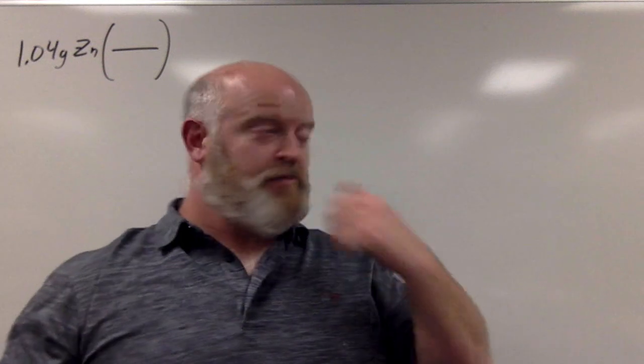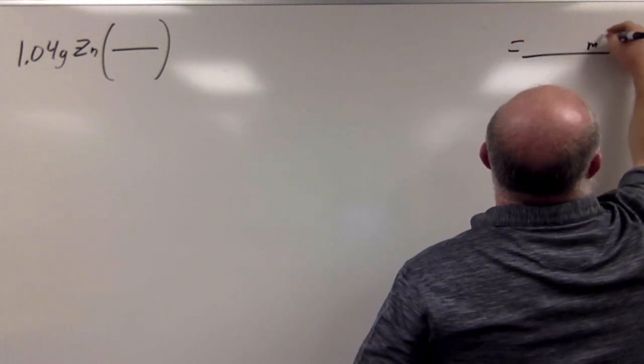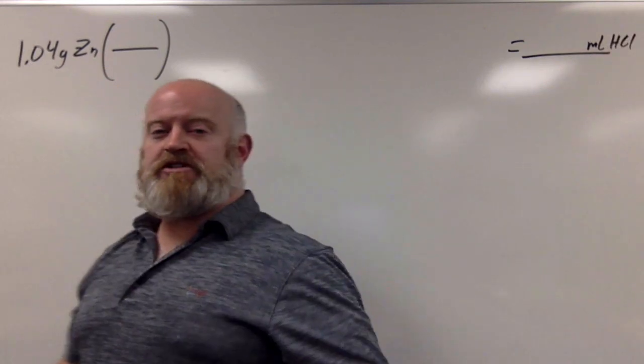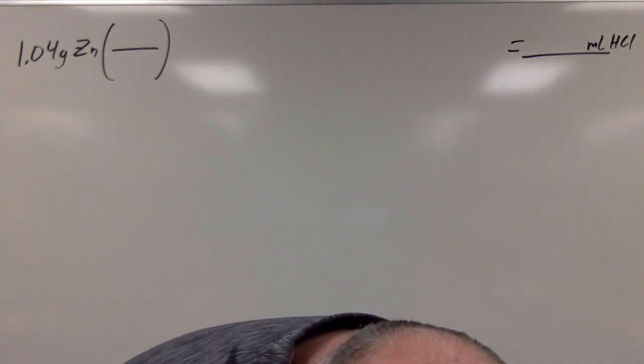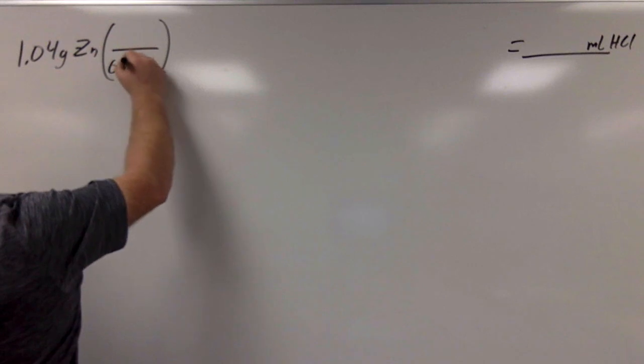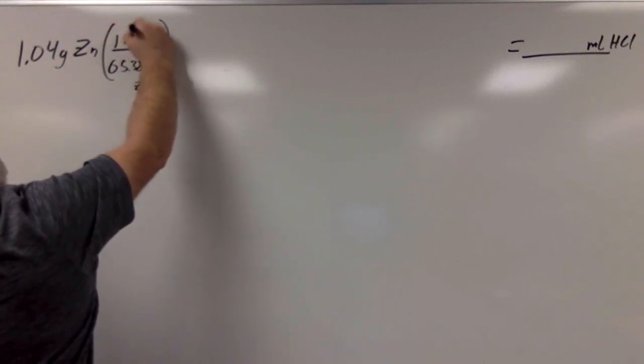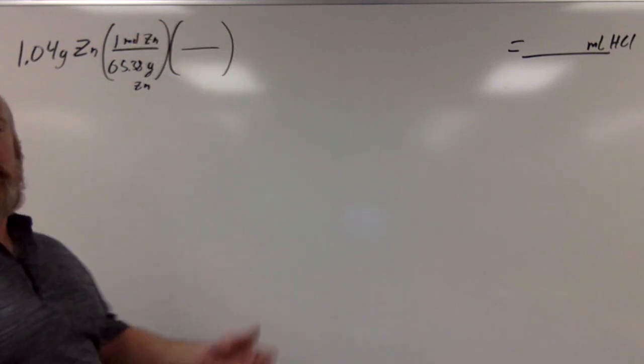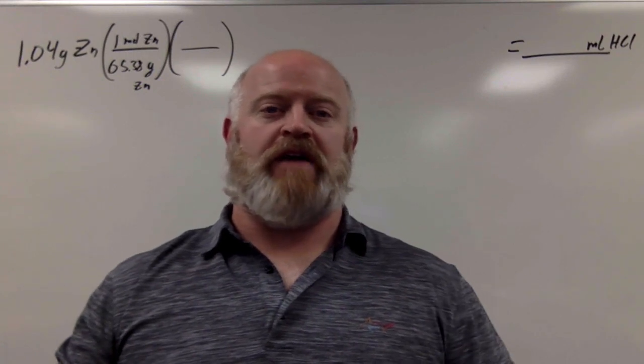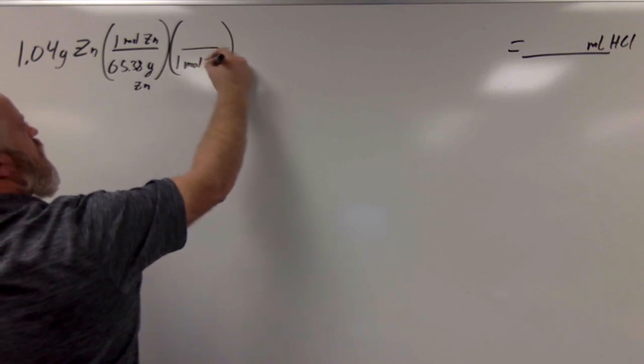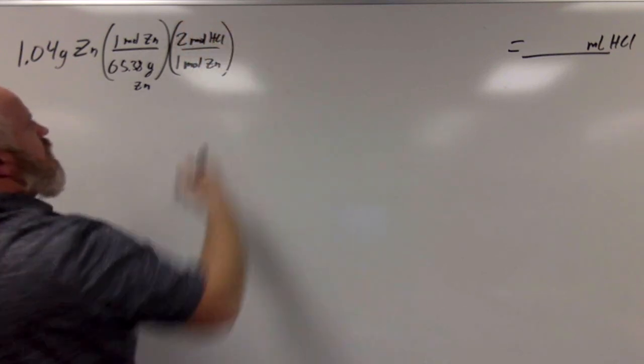So we have 1.04 grams of zinc. And we want to solve for how many milliliters of acid we're going to use. So at the end of this thing, we're going to have milliliters of HCl. So our first step, we have grams of zinc. Let's get to moles. We always want to go to moles as soon as possible. So we need zinc's molar mass. So we look up zinc and zinc is 65.38. So 65.38 grams of zinc for every one mole of zinc. Then we want our mole ratio because we want to get from zinc to hydrochloric acid as soon as possible. So looking up here, we have for every one zinc, it looks like we have two HCls. So for every one mole of zinc, we have two moles of HCl.